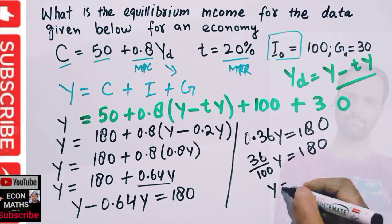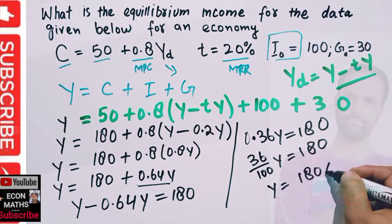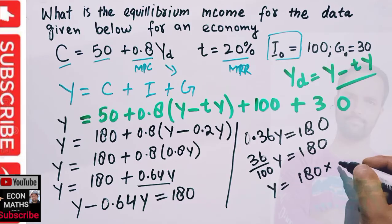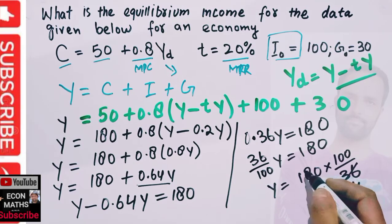So Y = 180 × 100/36. If I transpose 36/100, it gets reciprocated to the right-hand side, so we have 100/36. We can divide by 9: 9 fours are 36, 9 twos are 18.